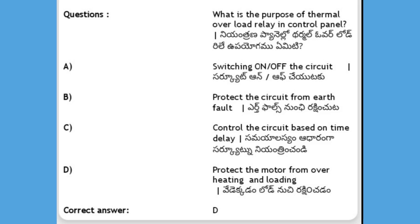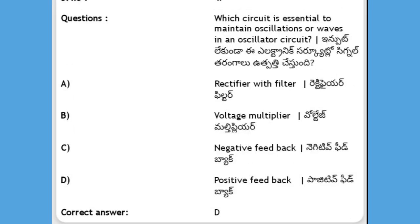What is the purpose of a thermal overload relay in a control panel? Options: switching on or off the circuit, protect the circuit from faults, control the circuit based on time delay, protect the motor from overheating and overloading. The answer is D, protect the motor from overheating and overloading.